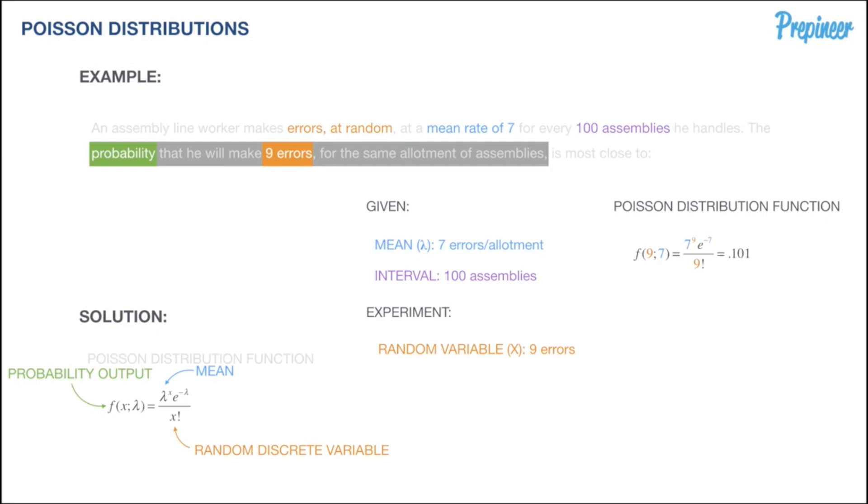We plug that into our calculator and we get 0.101, which tells us there's a 10% chance that this man is going to make a ton of mistakes above his mean rate—10.1%.